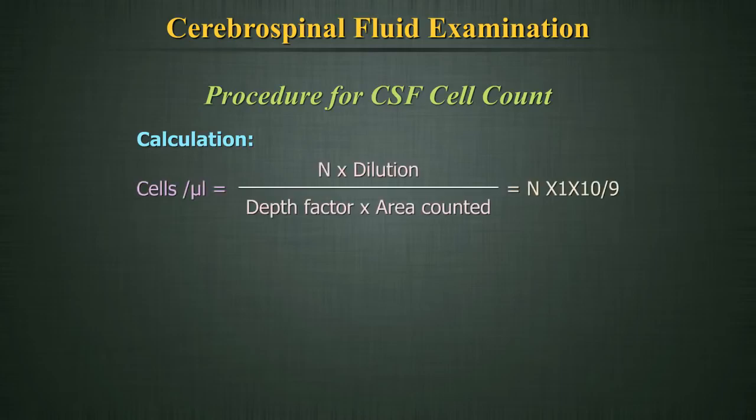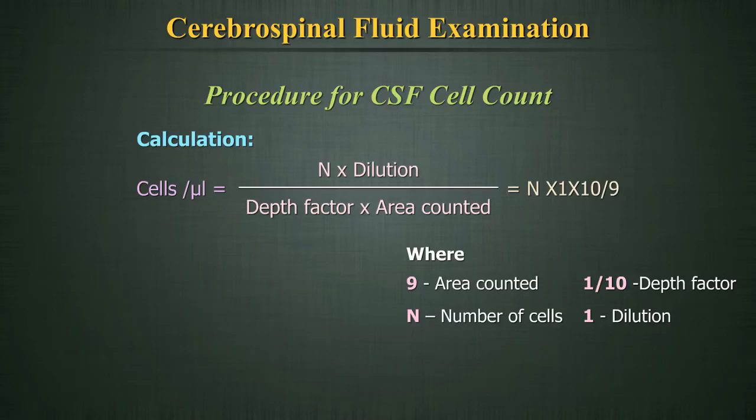In the formula, 9 is the area counted, N is the number of cells, 1/10 is the depth factor, and 1 is the dilution factor.